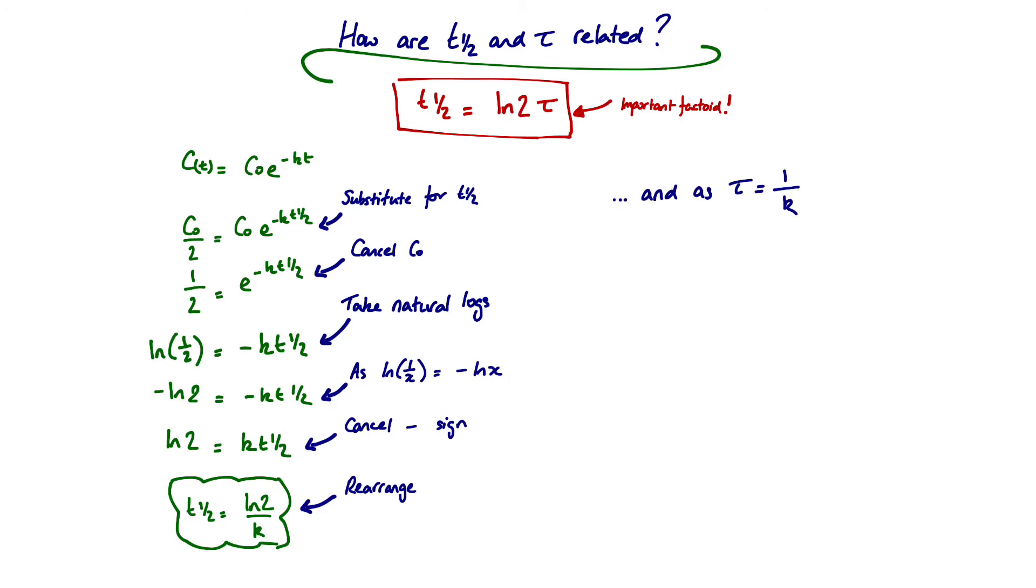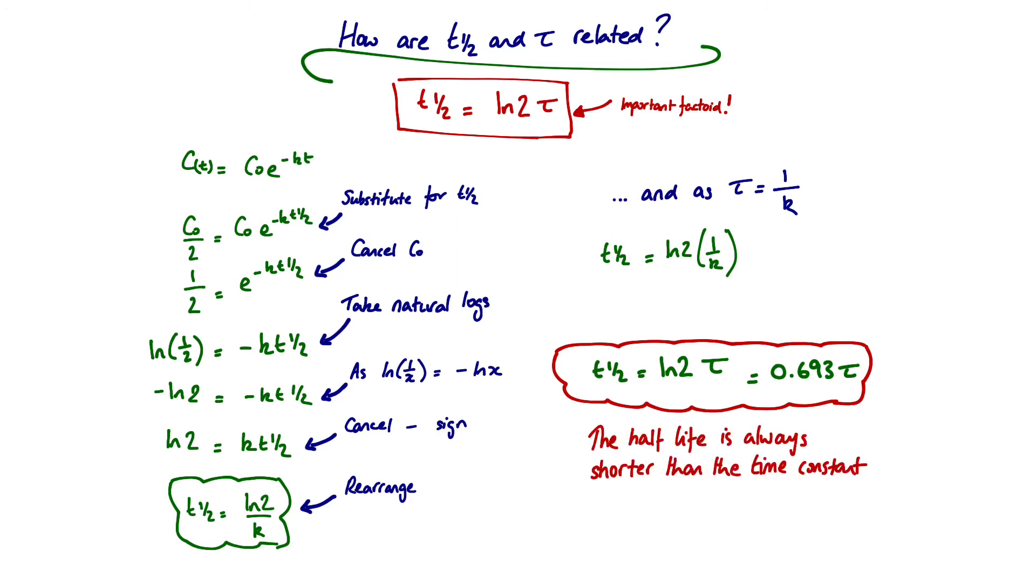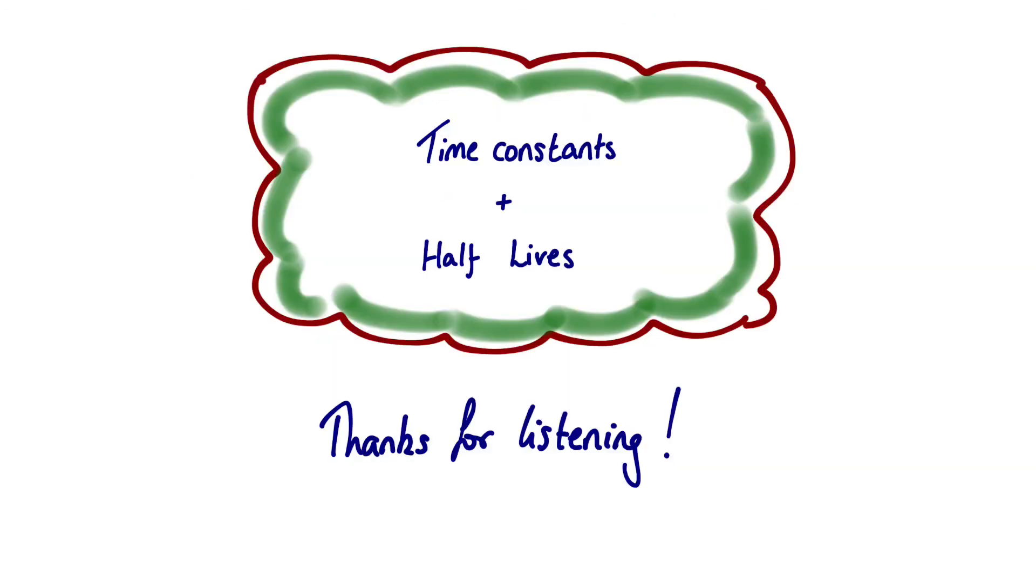We then recognize that our time constant was defined as 1 over k, as we went through previously. So if we substitute that in to our equation, where we had ln 2 times by 1 over k, then we get that half-life is ln 2 times by the time constant, which is 0.693 times by the time constant. That is, the half-life is always shorter than the time constant, to this proportionality factor of 0.693. Thanks for listening. I hope that was useful.